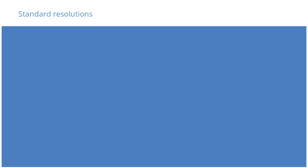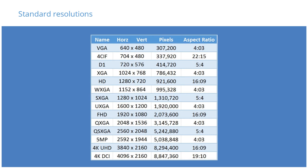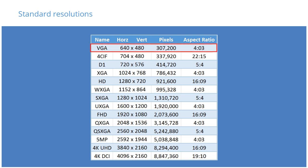Let's move on to resolution. Many different resolutions exist, but the overall principle is the same. Resolution is the horizontal number of pixels multiplied by the vertical number of pixels on the camera's image sensor. For example, the video graphics array (VGA) resolution has 640 by 480 pixels for a total pixel count of 307,200.